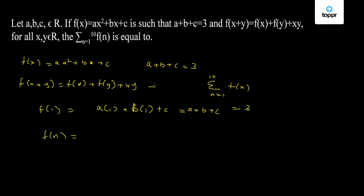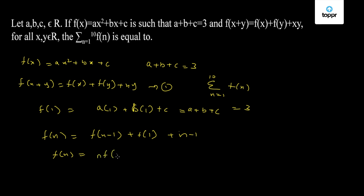So f(n), from equation 1, equals f(n−1) + f(1) + (n−1). Similarly, substituting the value of f(n−1) in terms of f(n−2) and recurring, we finally end up with f(n) = n·f(1) + summation from 1 to n of (n−1).